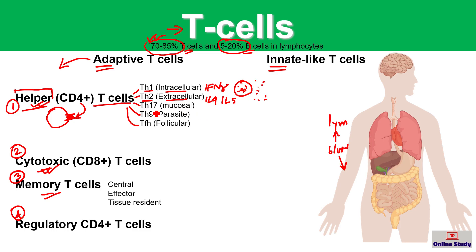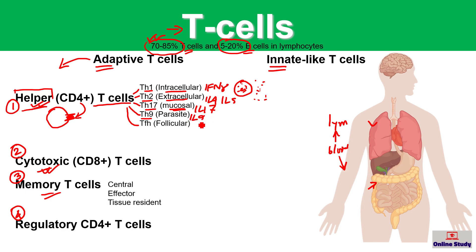Th17-type cells produce IL-17 cytokine and normally reside on mucosal surfaces, helping to protect against pathogens in the mucosal layer. Th9 cells produce IL-9 cytokine and are mainly effective against parasites.